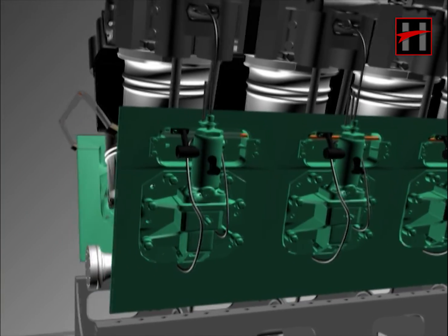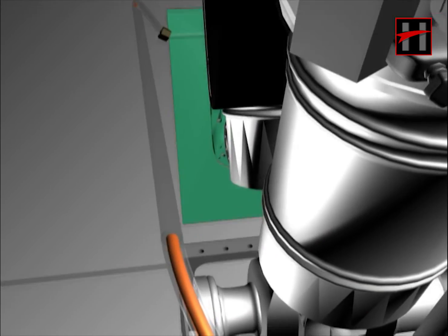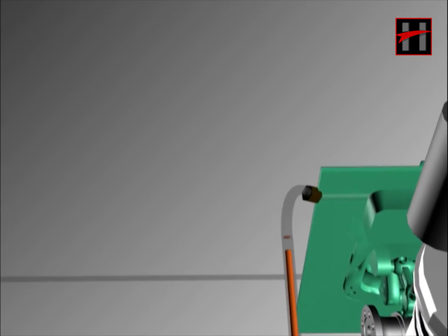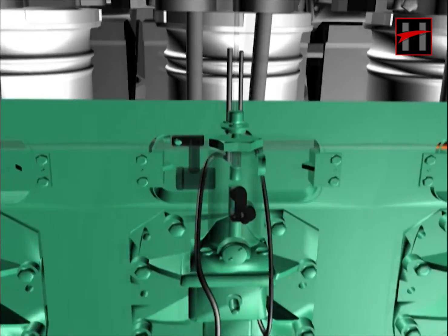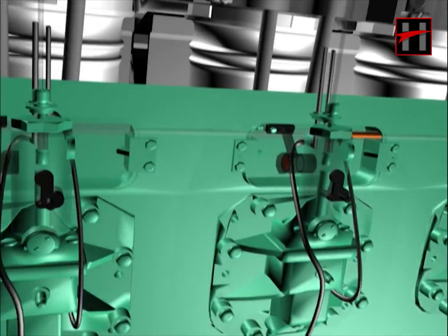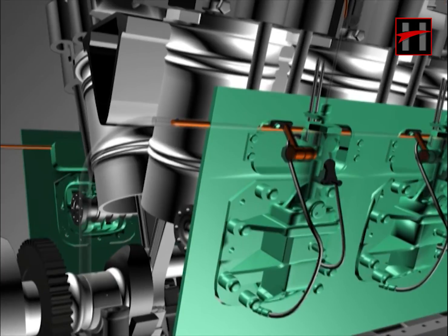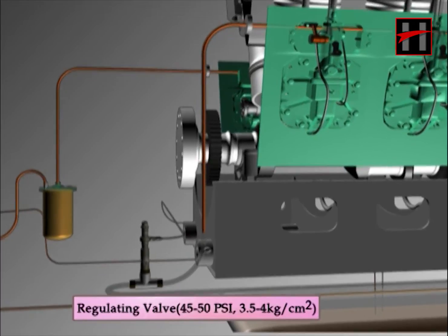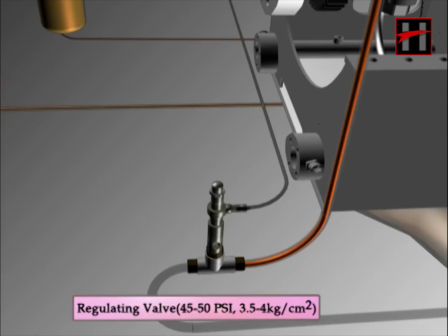The fuel oil also goes to the left fuel header through the crossover pipe. Near the R8 cylinder, the regulating valve is fixed. The regulating valve is fixed with the fuel header on the left side and is always set at 45-50 psi.